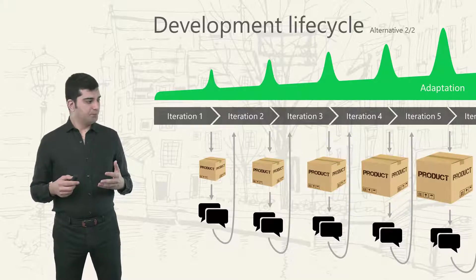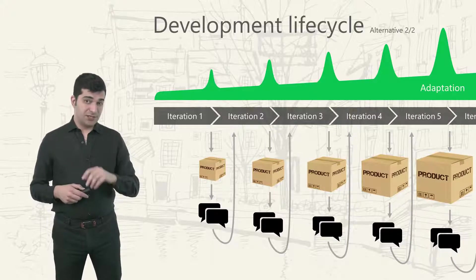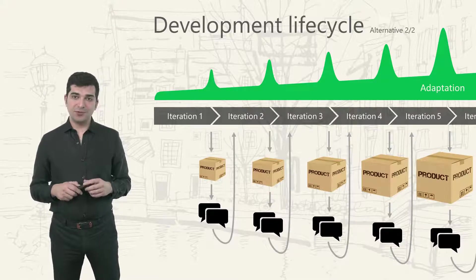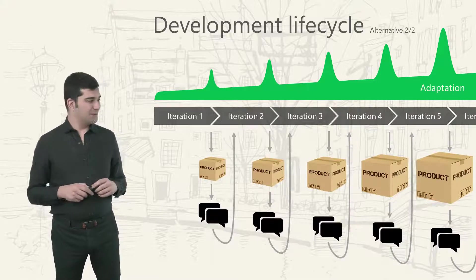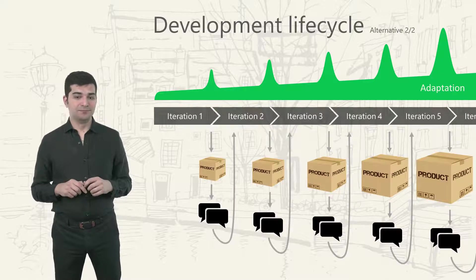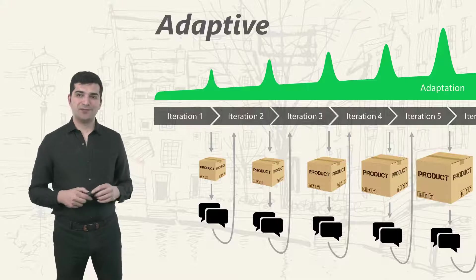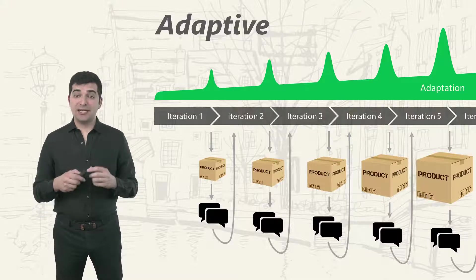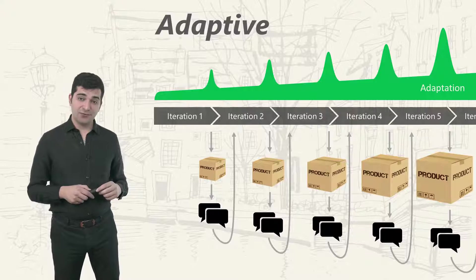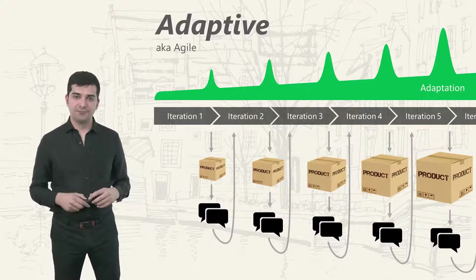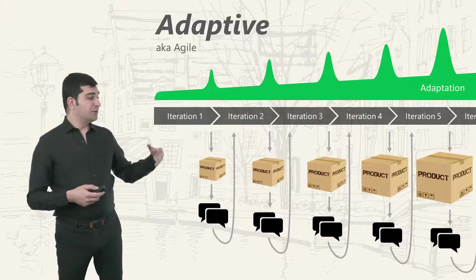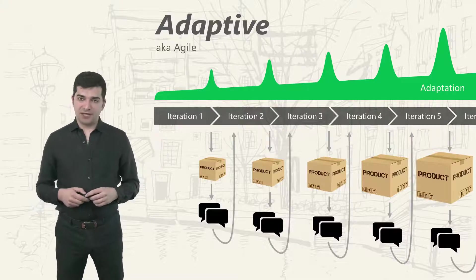And it works very well because we are using the product to understand what the customer wants instead of writing on paper. Based on experience, it works much, much better. We can call this an adaptive life cycle, and the other name for this is agile. You have an agile project when you are using an adaptive life cycle.